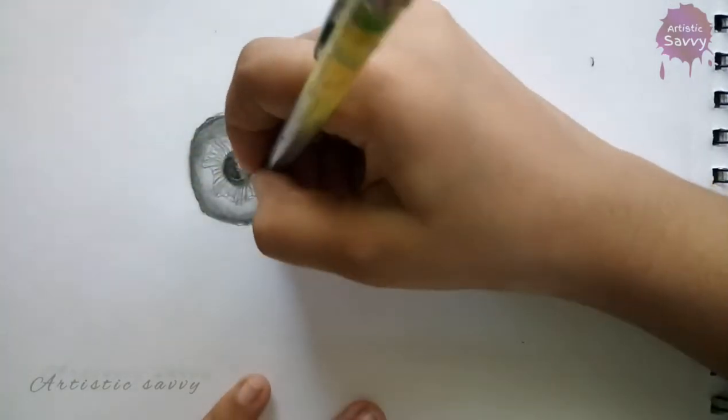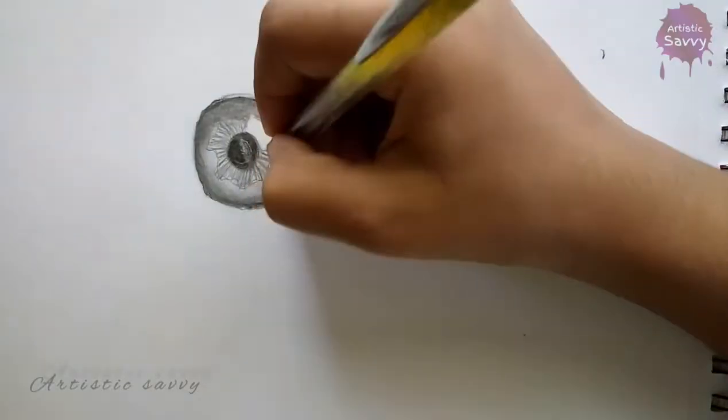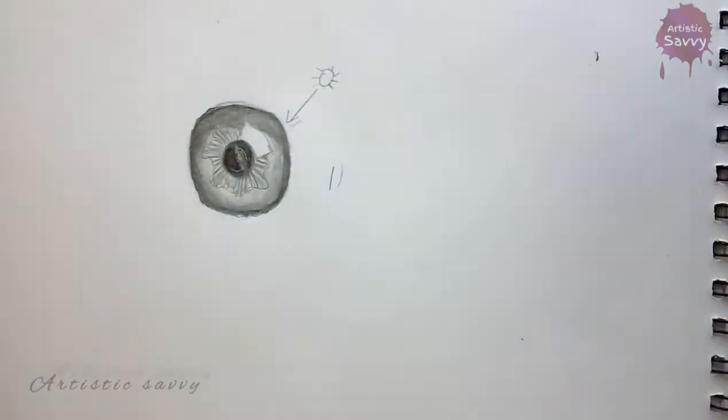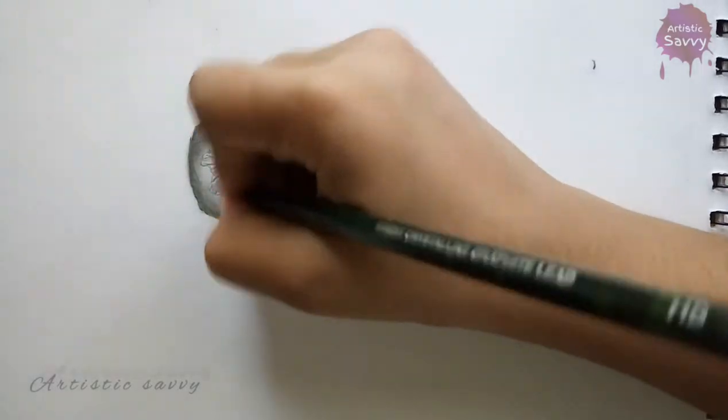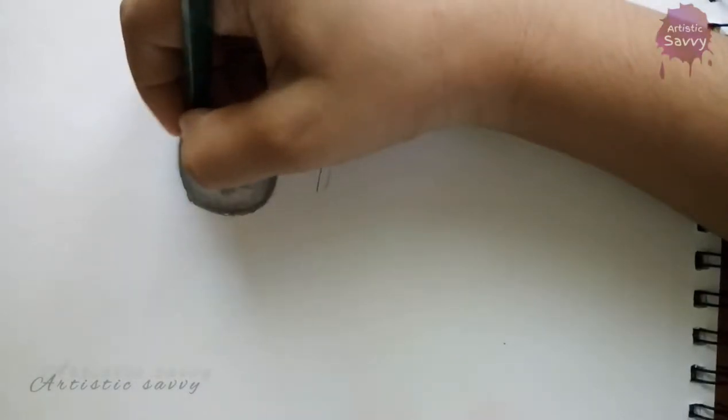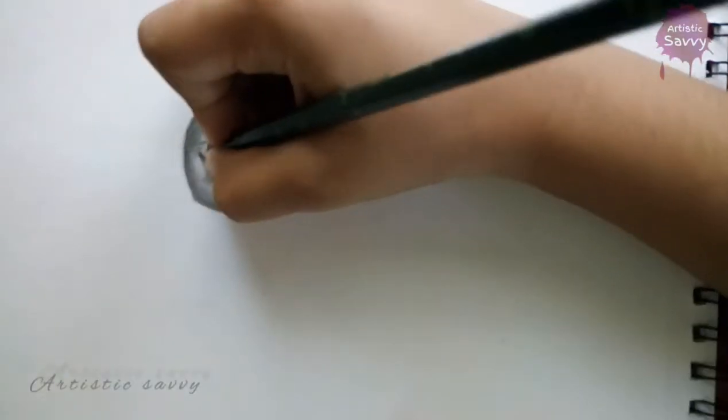Going inside the pupil, it should be darker, so I'm using my HP pencil. After that I will use my 4B pencil to go over it.